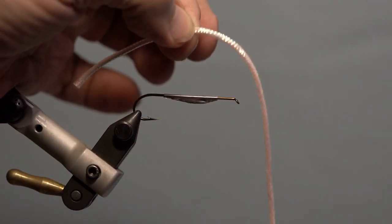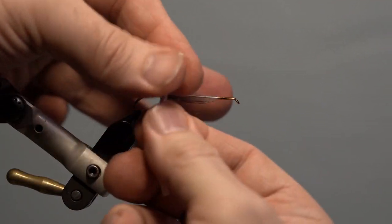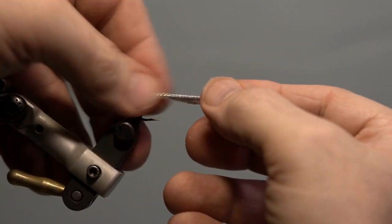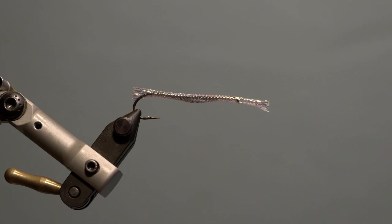Next, prepare the mylar tubing. Measure, trim and remove the insert. Slide the mylar through the hook and over the body slightly past the bend.